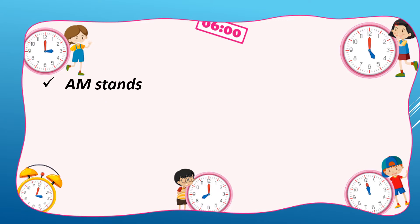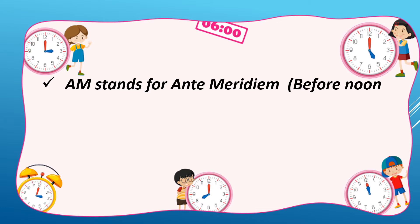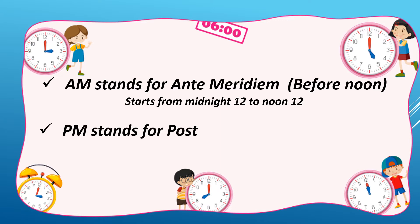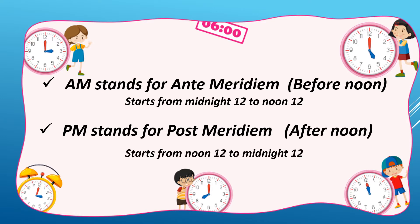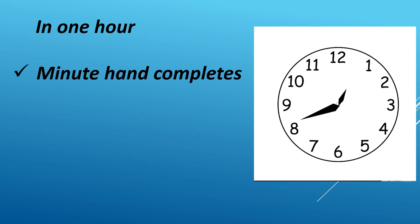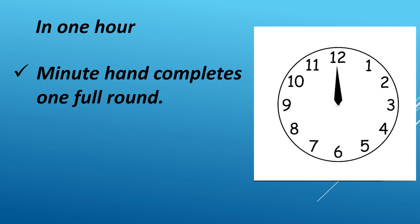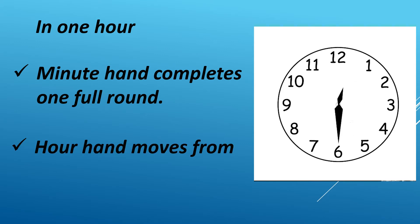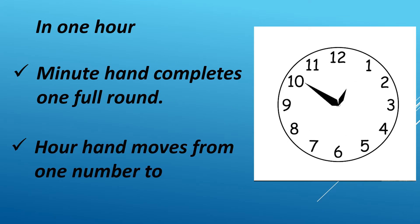AM stands for ante meridian, that is before noon, which starts from midnight 12 to noon 12. PM stands for post meridian, that is afternoon, which starts from noon 12 to midnight 12. In one hour, the minute hand completes one full round. The hour hand moves from one number to the next.